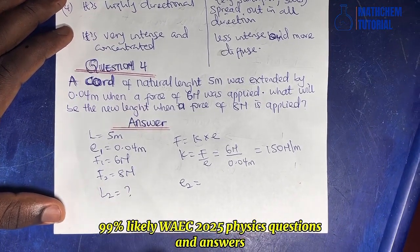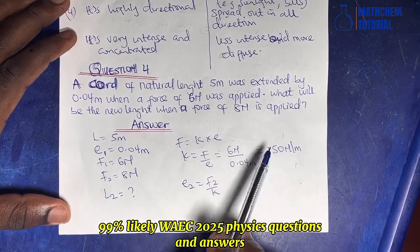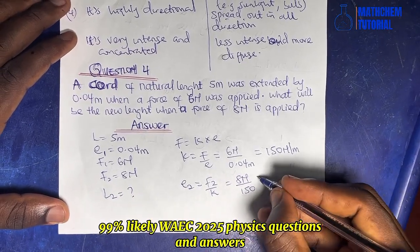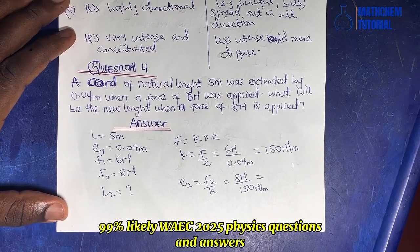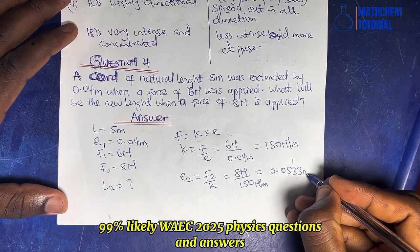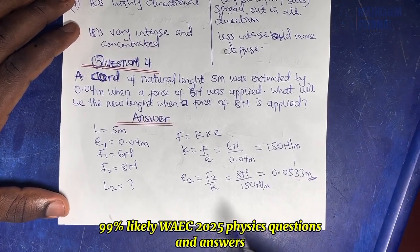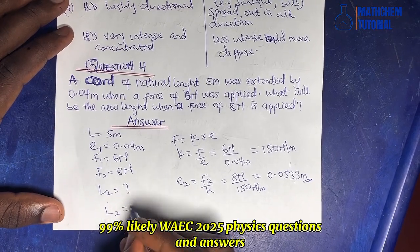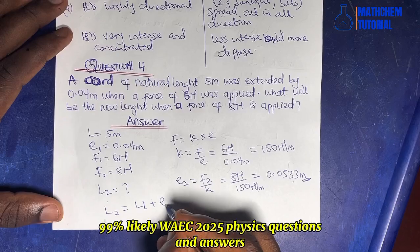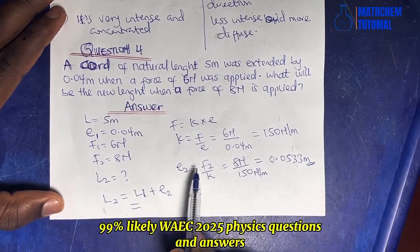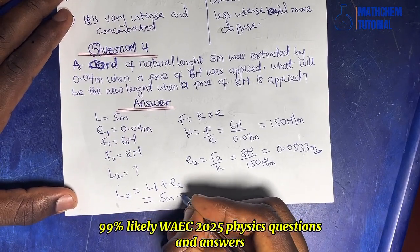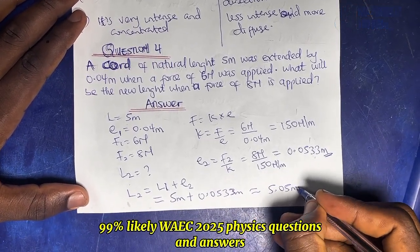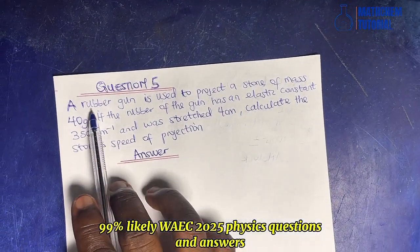e2 = 8 / 150 = 0.0533 meters. So the new length L2 = L1 + e2 = 5 + 0.0533 ≈ 5.05 meters.